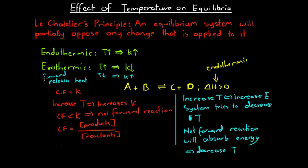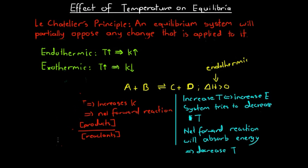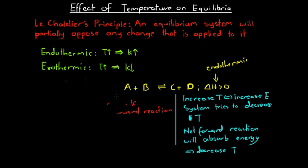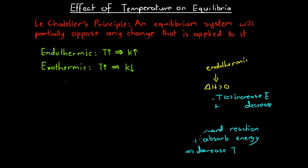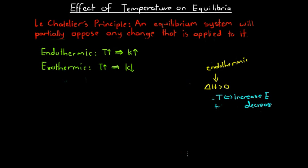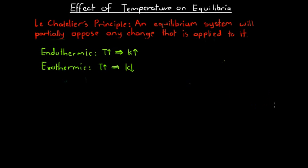So that is how temperature affects equilibrium. Using Le Chatelier's principle, that is how temperature causes a shift in equilibrium. Now we're going to look at how we can apply this in order to maximize the yield of a certain reaction.